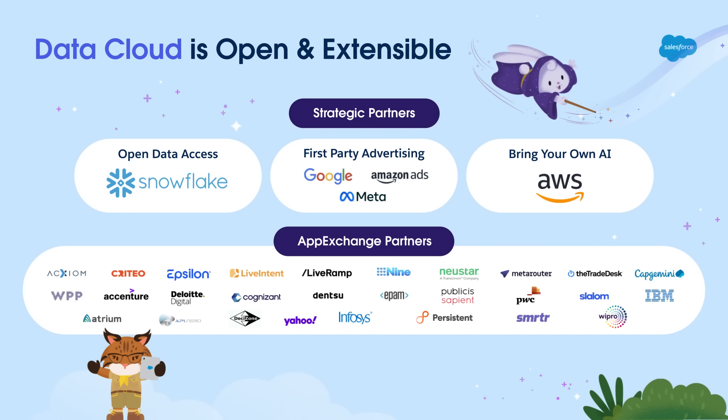For example, we have been working with Google Ads, Amazon, Meta, and Snowflake to bring new functionality to the Data Cloud platform. Additionally, with Amazon SageMaker, you have the ability to bring your own AI model to the Data Cloud platform. We also have a variety of AppExchange partners that have been working on functionality that can be used in the Data Cloud platform.